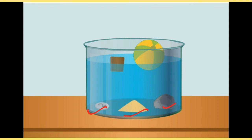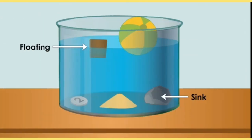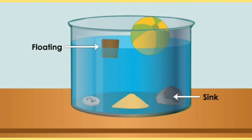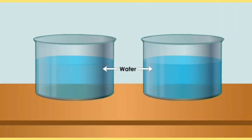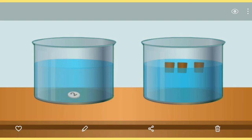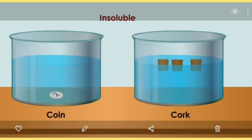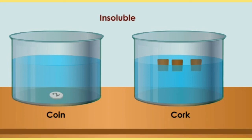You can see coin, sand, pebble, cork, and a ball. Some of these things sink to the bottom in water, while two things are floating on the water — cork is floating on the water. Pebble, sand, and coin sink into the water. Although cork and coin are both insoluble, their property is different: the coin's weight is more so it sinks, while cork's weight is less so it floats.